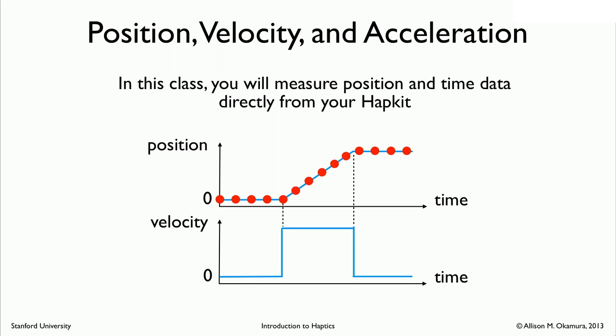So we don't really know the continuous position over time. We just know what the position was at the time that we measured it. In fact, the software that you will write for your haptic kit will try to sample that position at a constant rate. There's going to be some delta t at which we will over and over again be measuring the position.